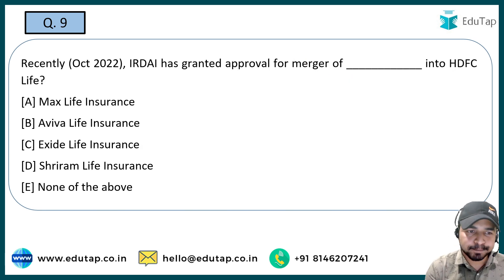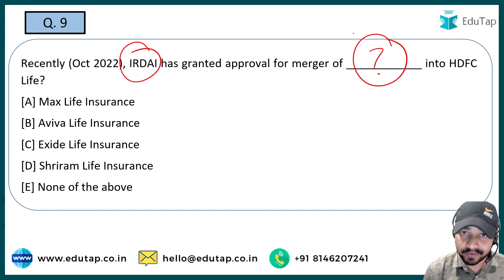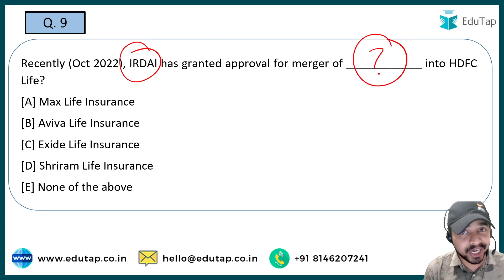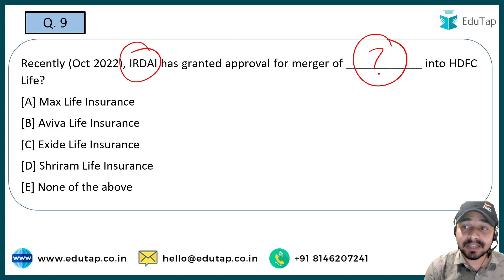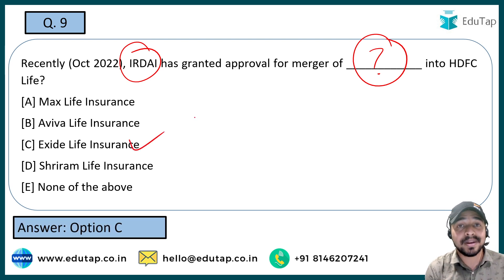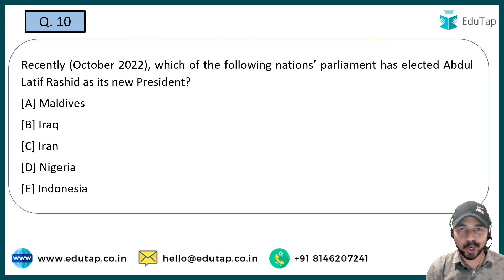The next question: IRDAI has granted approval for a merger of which company into HDFC Life? These questions are very direct in nature and don't need much explanation. The right answer is Option C — Exide Life Insurance. So the two parties in this merger are Exide Life Insurance merged into HDFC Life.